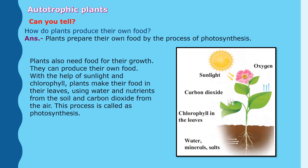Let us take information about autotrophic plants. Plants prepare their own food by the process of photosynthesis. Plants need food for their growth and they produce their own food with the help of sunlight and chlorophyll. Plants make their food in their leaves using water and nutrients from the soil, and carbon dioxide from the air. This process is called photosynthesis.